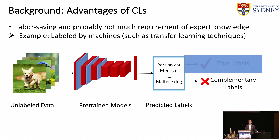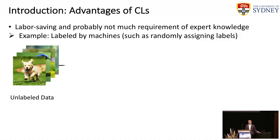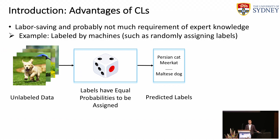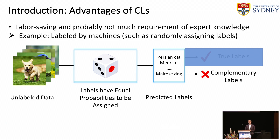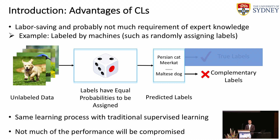Today, we mainly focus on the complementary label. We can also assign complementary labels using random strategies. Given a set of unlabeled data, we can select a label from the label set using uniform and equal probability. After obtaining the predicted label, a simple judgment gives the complementary labels. There are also other advantages: learning with complementary labels shares the same learning process with traditional supervised learning and enjoys only a small decrease in performance.